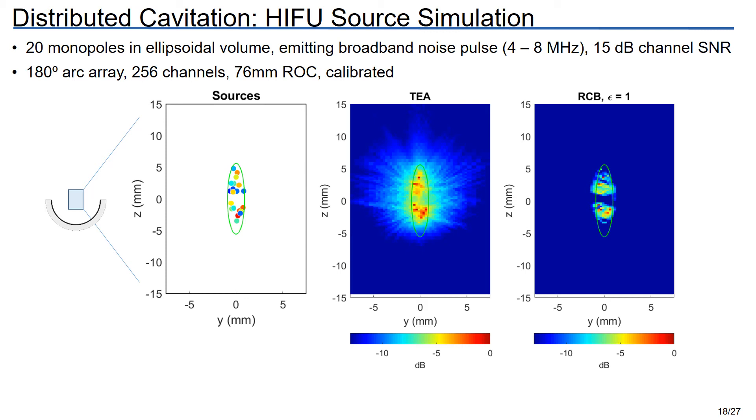And finally, if we use an expanded array, this time 180 degree arc with the same channel count as we had with the two arrays before, now we start getting some really nice detail about the source distribution. This kind of array has been used by the photoacoustics community for quite a while, and I think it has some use here for PAM as well.